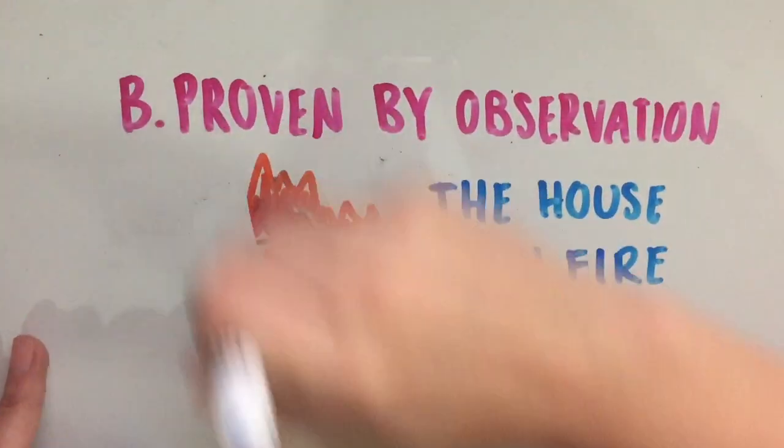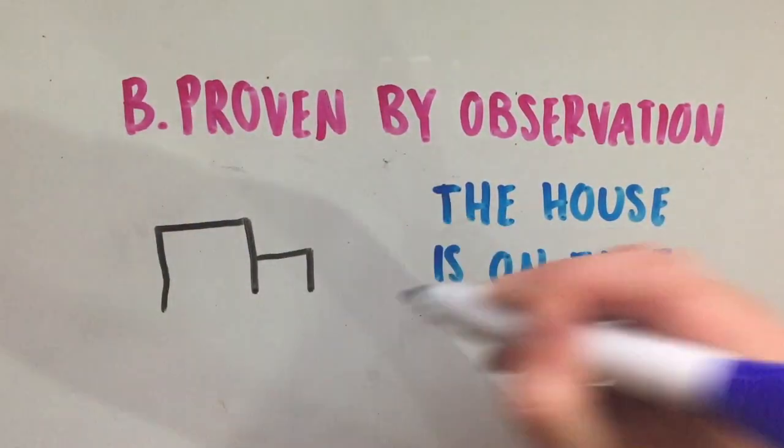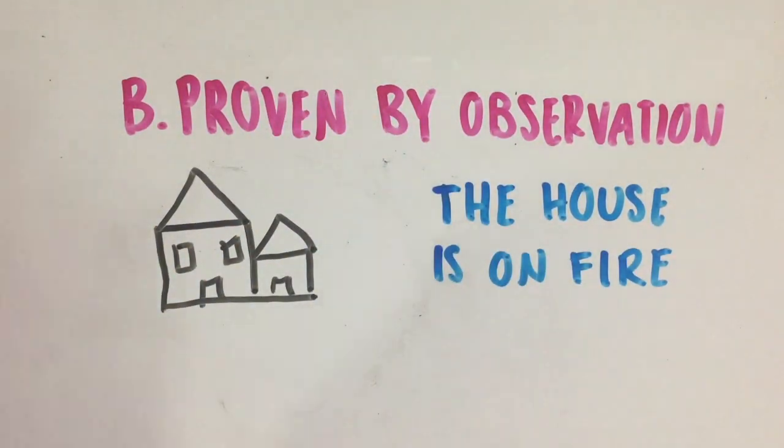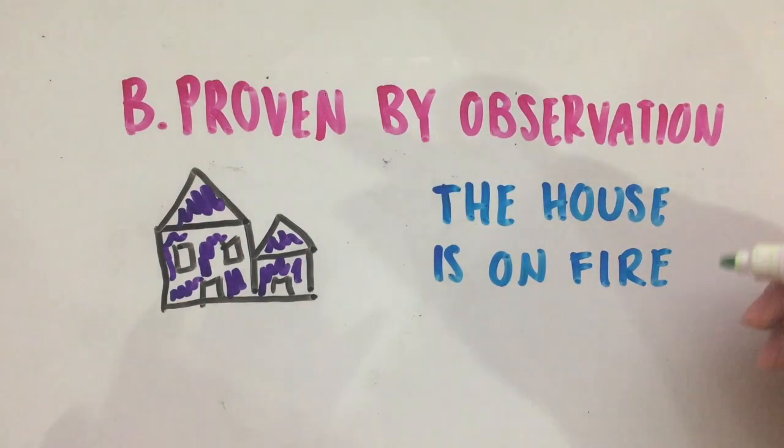if the sentence can be proven by observation. For example, the house is on fire. This would be a meaningful sentence because regardless if the house is on fire or not, what makes the sentence meaningful is that you can actually check if it's burning or not. This sentence is provable.